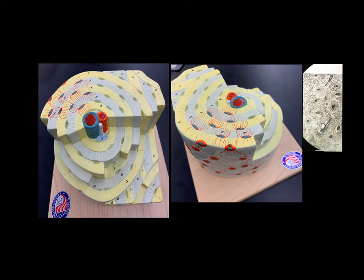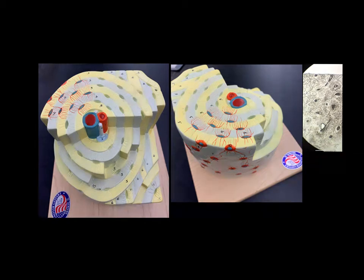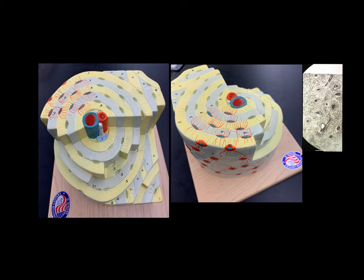And along each lamella, we can see there are these small oval structures. These blue things right here in the model, these are bone cells. They're called osteocytes. In the microscope slide here, they're the things that look like little ants is what I always think. But these are osteocytes or bone cells.